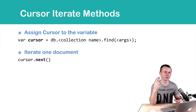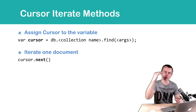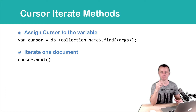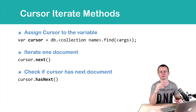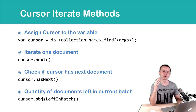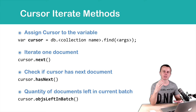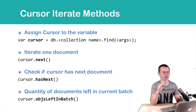Not 20 documents, not 50 documents — just one document. And using the next helper method, you can iterate through the whole cursor. Another useful method is hasNext. This method just returns true or false. If the cursor has a next document, this method will return true. If there are no more documents left, it will return false. There is another useful method called objsLeftInBatch. This method will return the number of documents that are left in the cursor till the end of the current batch. Let's look at all those methods in action.